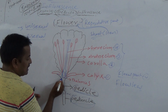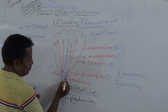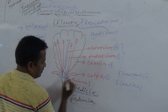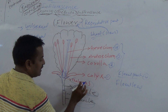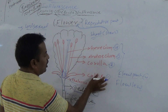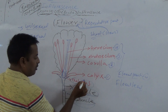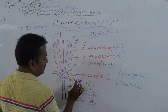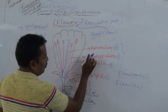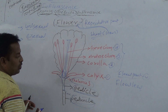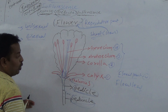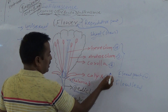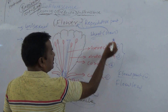The apex of the pedicel is slightly condensed and is called the Thalamus. Thalamus is the seat of the floral parts — it is the base of the four floral parts. So above the Thalamus, four floral parts are present: Calyx, Corolla, Androecium, and Gynoecium.